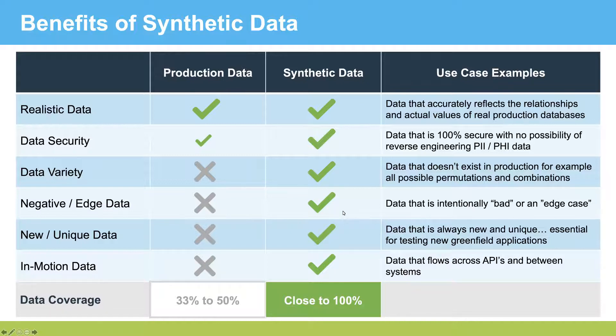From a testing perspective, you can get negative data, edge case data — i.e., not a happy path — intentionally bad data, new data, and unique data.